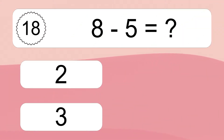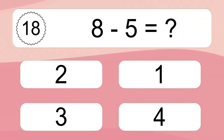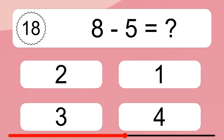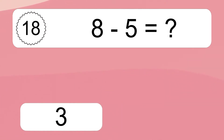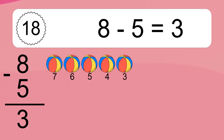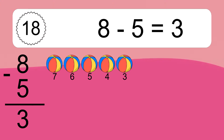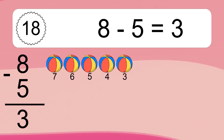8 minus 5 equals what? 8 minus 5 equals 3. Let's count it. 7, 6, 5, 4, 3.